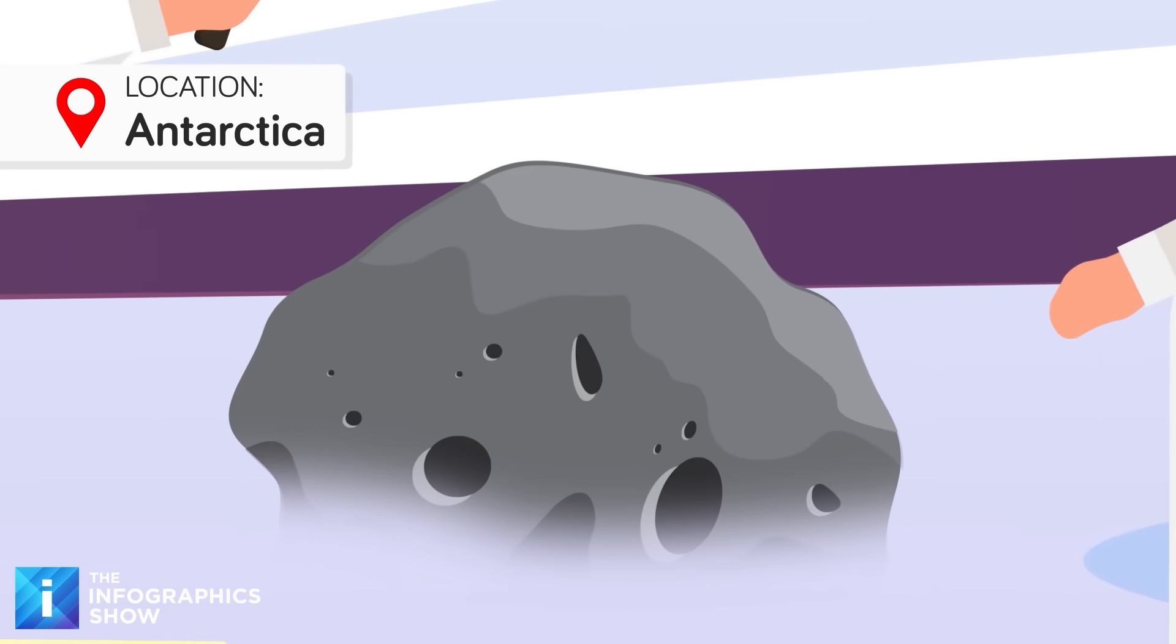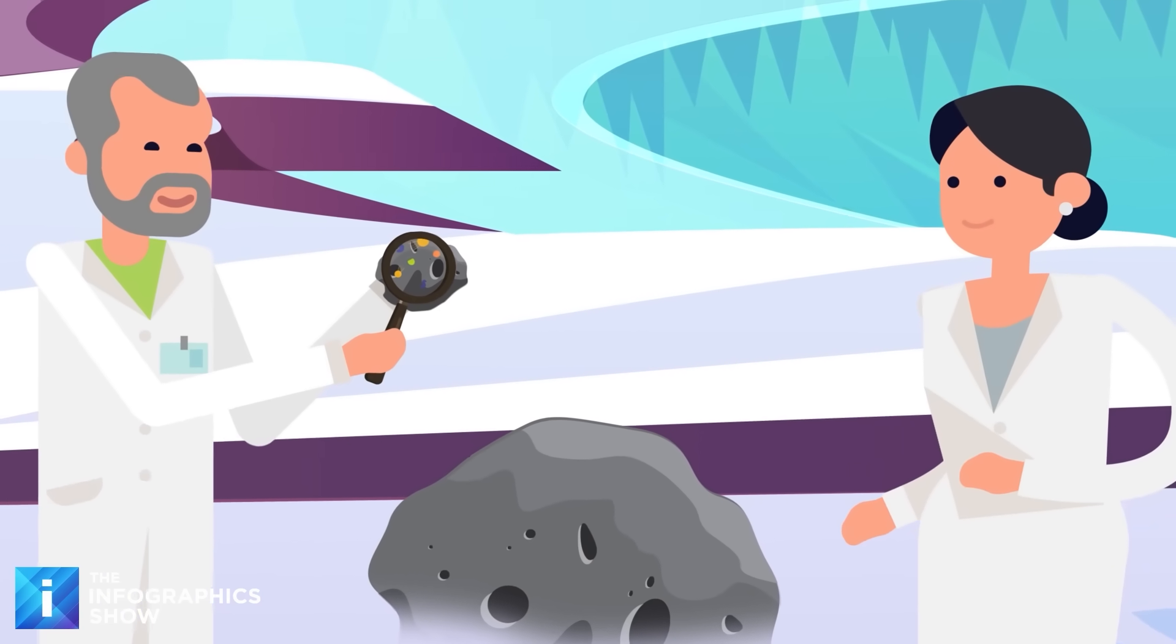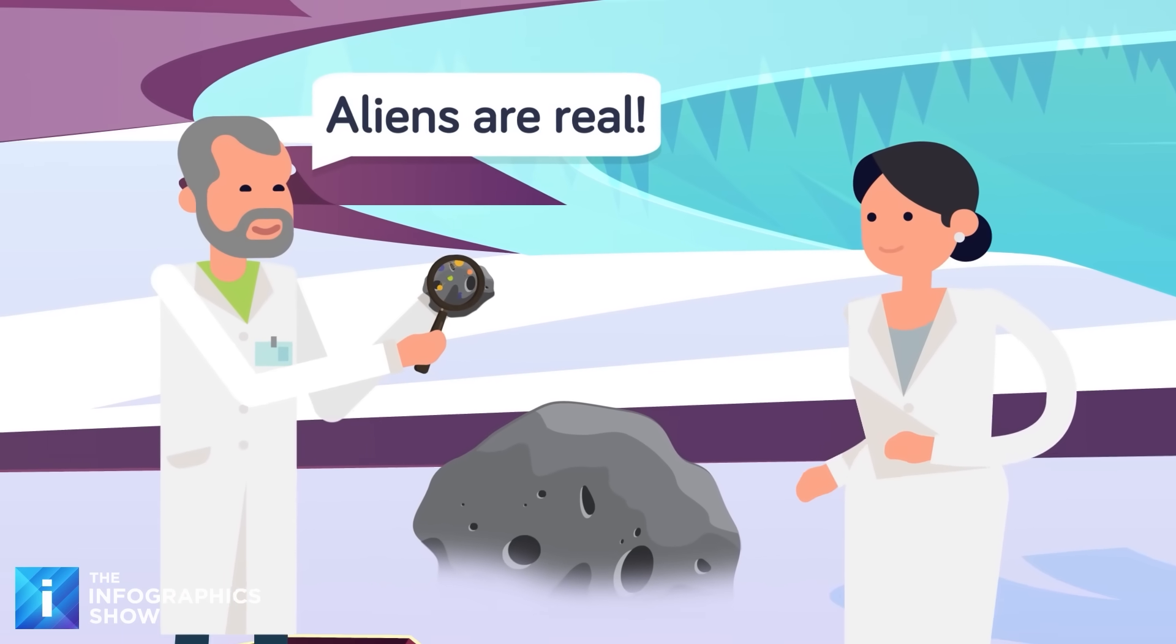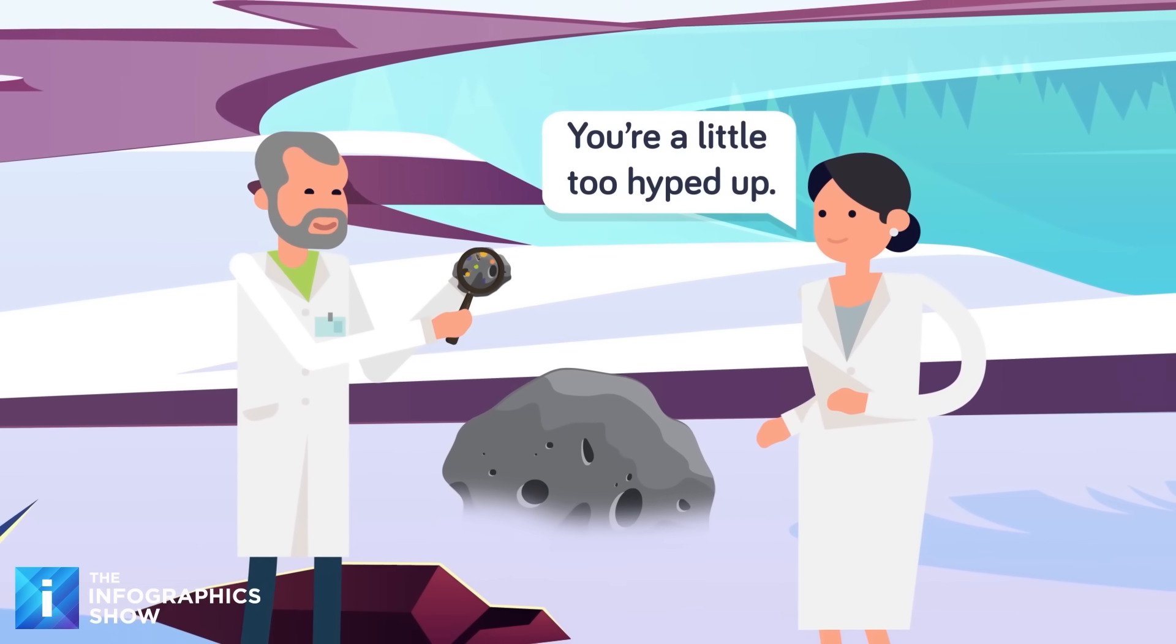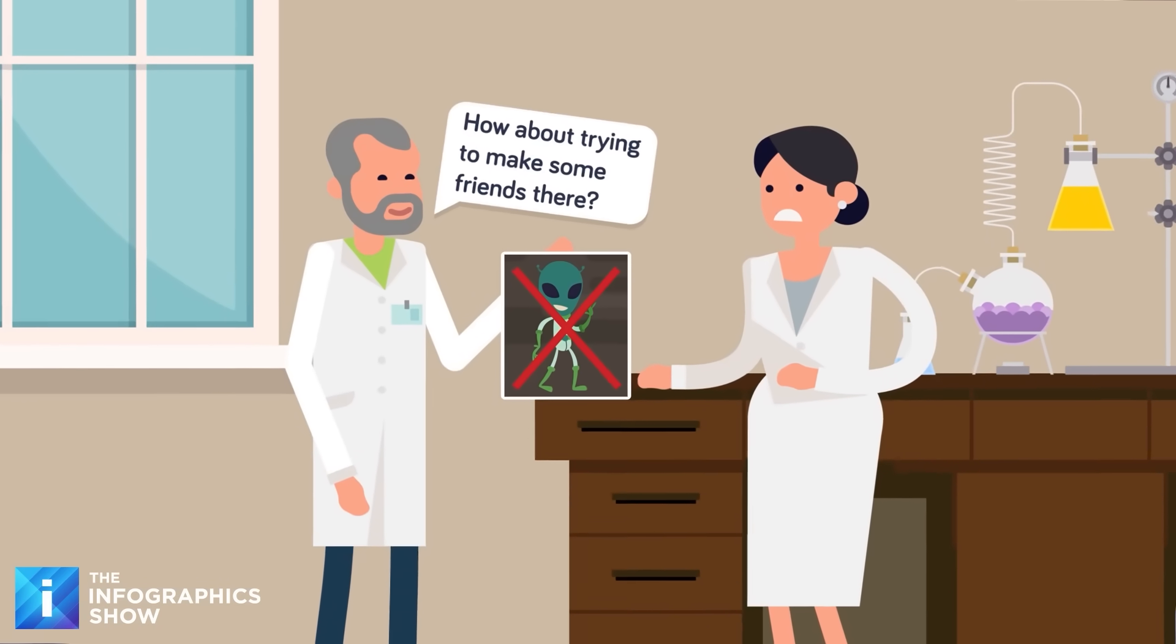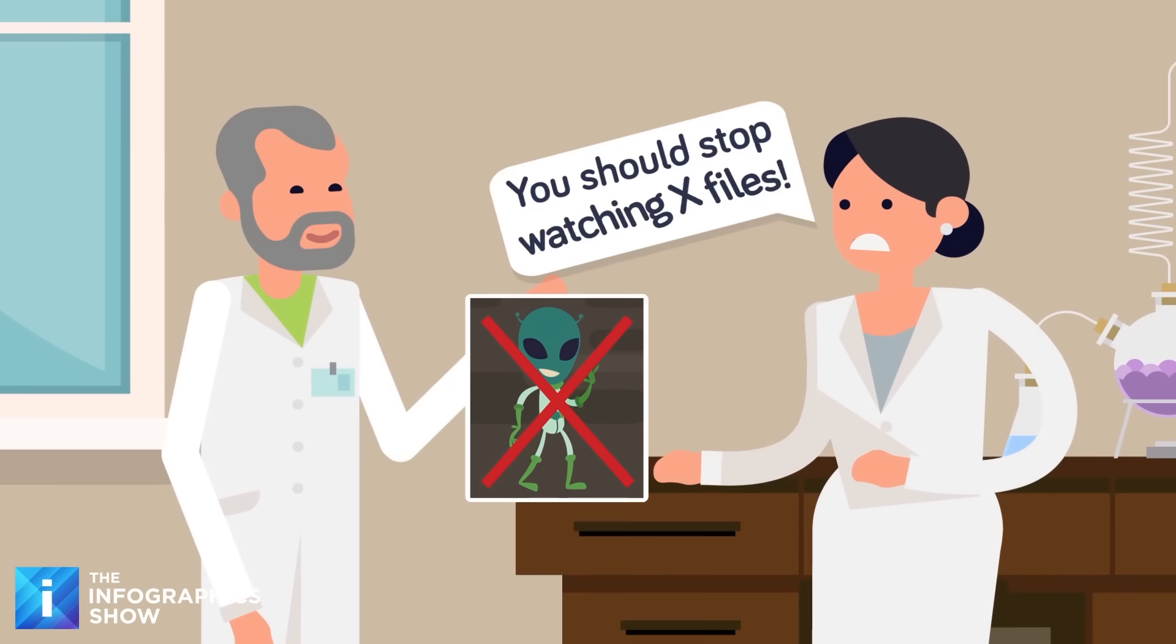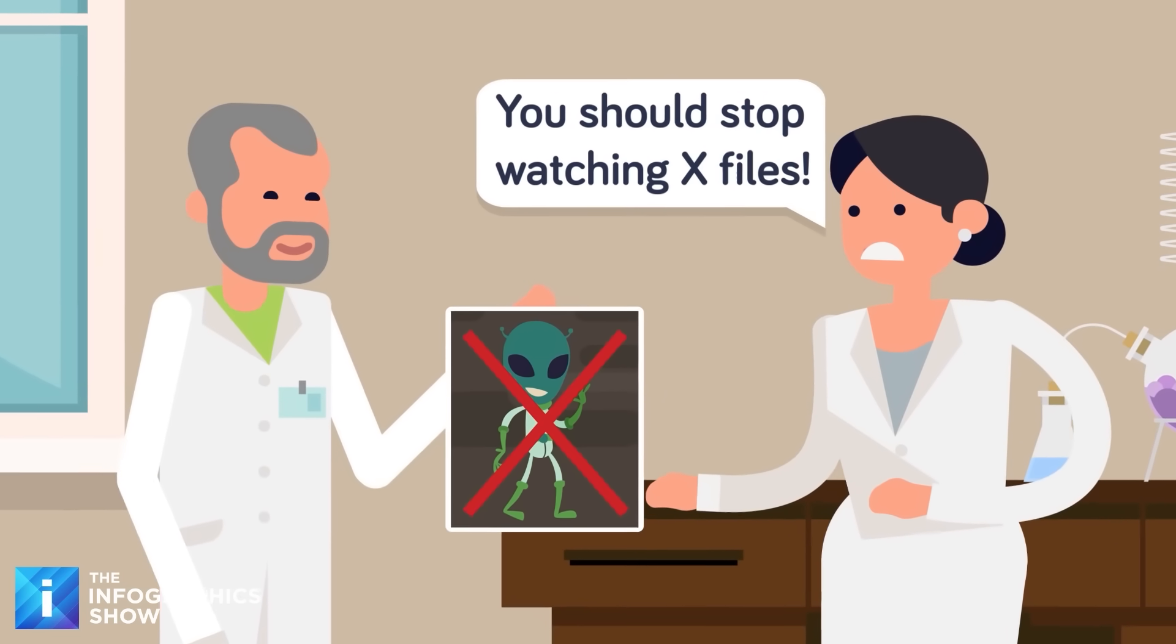A meteorite discovered in Antarctica in 1996, believed to have originated from Mars, contained microscopic structures that a NASA team suggested could be fossilized bacteria. This claim generated significant excitement but was met with considerable skepticism within the scientific community. Alternative non-biological explanations for the structures and organic molecules in the meteorite have been proposed and today the scientific consensus leans away from this being proof of past Martian life.